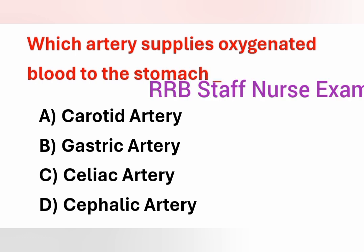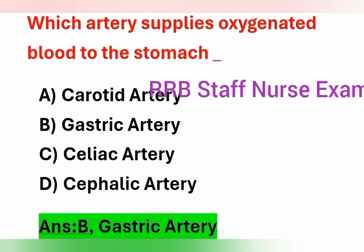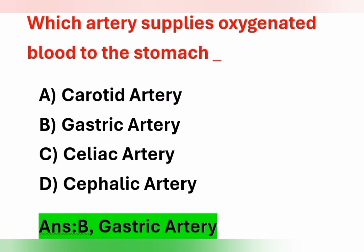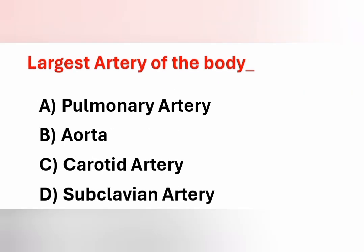Next question: which artery supplies oxygenated blood to the stomach? Options: Option A – carotid artery. Option B – gastric artery. Option C – celiac artery. Option D – cephalic artery. The artery which supplies oxygenated blood to the stomach is the gastric artery. Option B is the correct answer. This is also one of the previous questions from the RRB Stephanes exam.